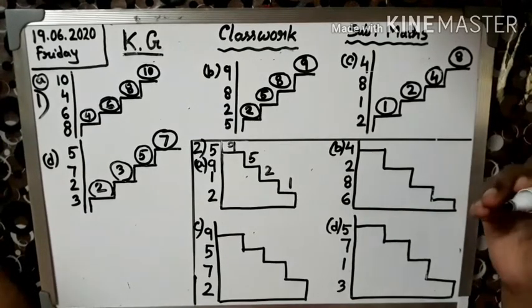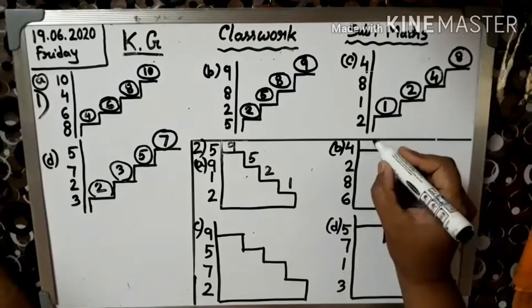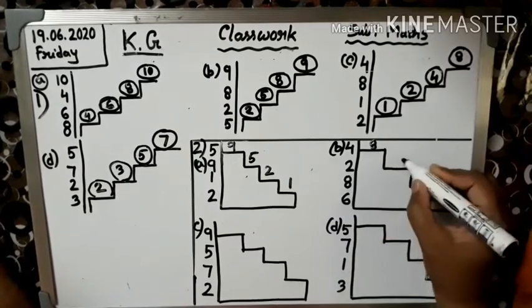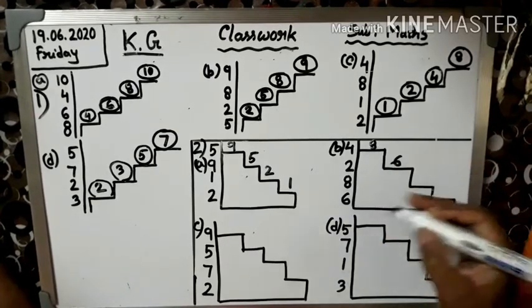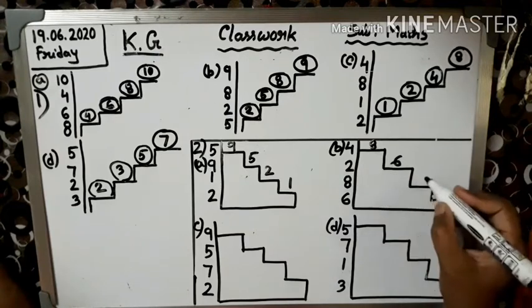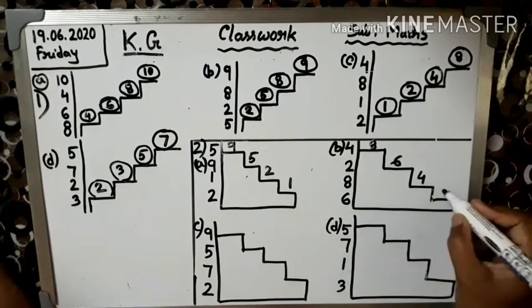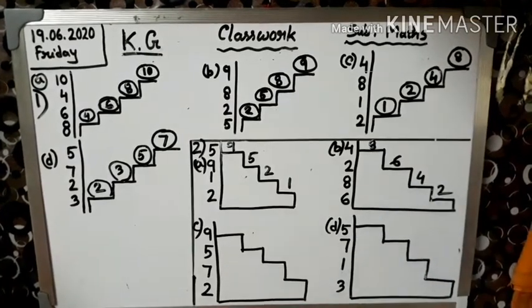Phir repeat karo: ten, nine, eight - eight hai. Seven, six, five, four, three, two, one. Toh four pehle hai. Three, two, one.